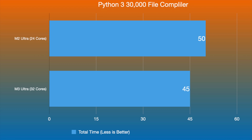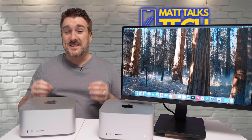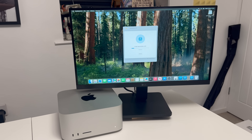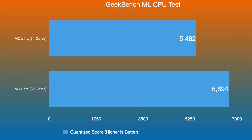After this I ran Geekbench AI tests. Starting with machine learning using the CPU, the quantized score for the M2 Ultra was 5,482 compared to 6,694 for the M3 Ultra. There's a nice gap there, though I was hoping for something closer to 7,694.